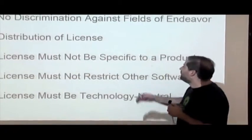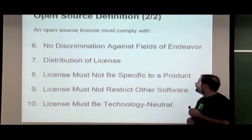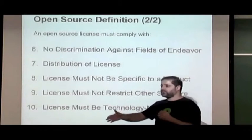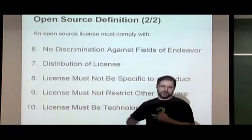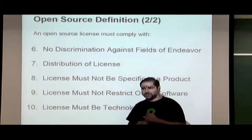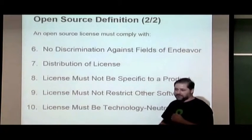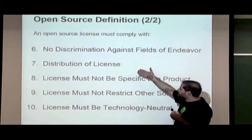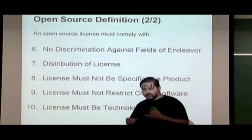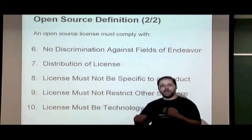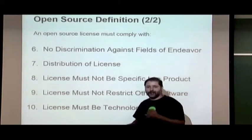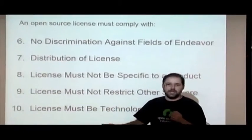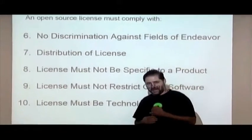The license also cannot discriminate against a field of use — you can't say 'this software is free only if used for non-military purposes,' for example. That's a traditional restriction we see a lot, but you can't discriminate against the field of use at all. Additionally, the distribution of the license should not be tied to other forms — for example, you shouldn't have to sign an NDA to access the source code.